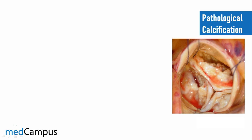Let us understand the difference between normal physiological calcification and pathological calcification. Formation of calcium phosphate, that is hydroxyapatite crystals, is very important for the survival of the skeletal system. Osteoblasts and osteoclasts work in tandem for the formation and remodeling of bone, and this usual calcification occurs throughout the lifespan of a human being.